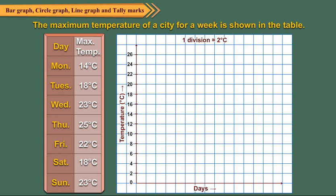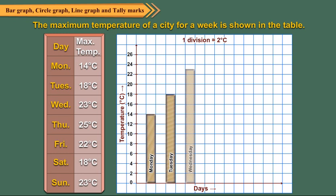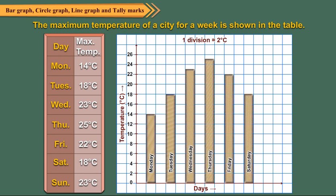Since 7 days of the week are considered, so 7 bars are to be constructed on the horizontal axis. Leave one division from the vertical axis and draw a rectangular bar to represent the temperature on Monday. Now draw bars to represent the temperatures of other days of the week, leaving equal gap between each bar.